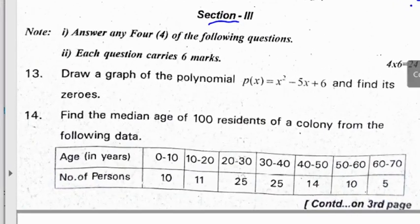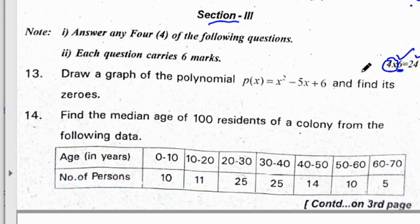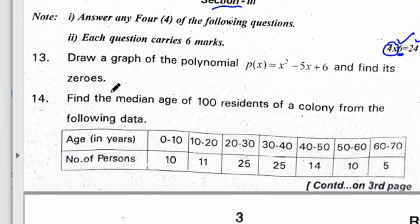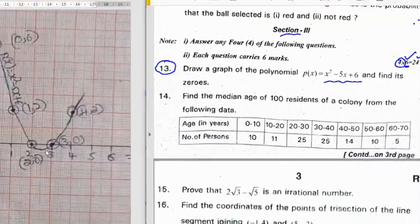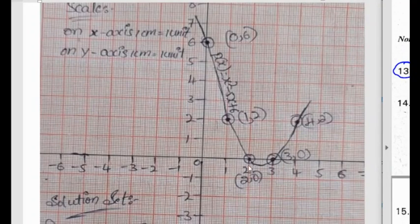We will discuss section 3 now. In section 3 we have 6 questions, but we have to attempt only 4. Each question carries 6 marks, total 24 marks, so we have choice. The first question in the long answer section is: draw a graph of the polynomial P(x) equals x squared minus 5x plus 6 and find its zeros. The zeros of this polynomial are 2 and 3.